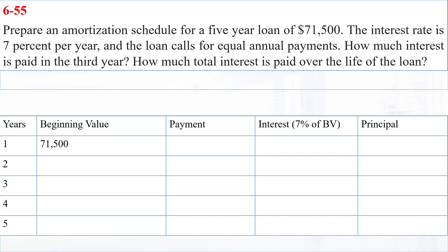Prepare an amortization schedule for a five-year loan of $71,500. The interest rate is seven percent per year and the loan calls for equal annual payments. How much interest is paid in the third year? How much total interest is paid over the life of the loan?